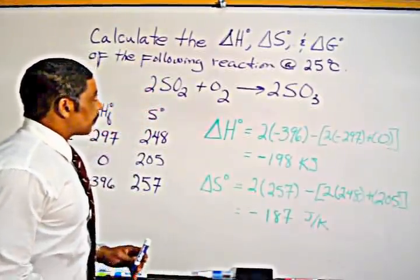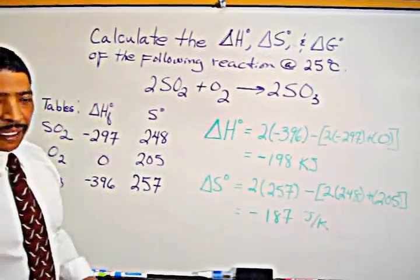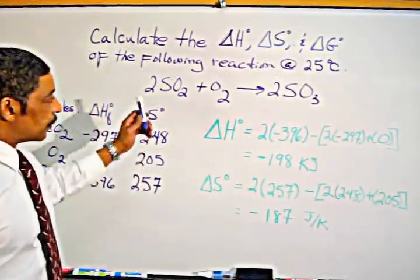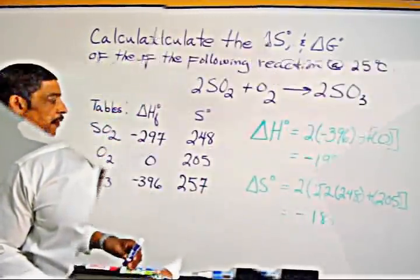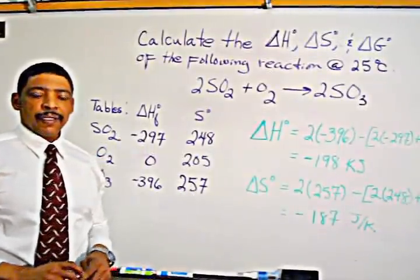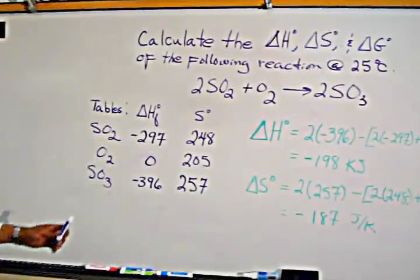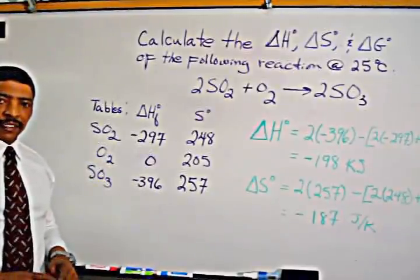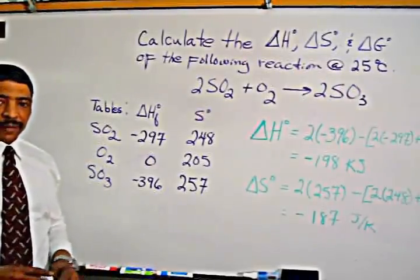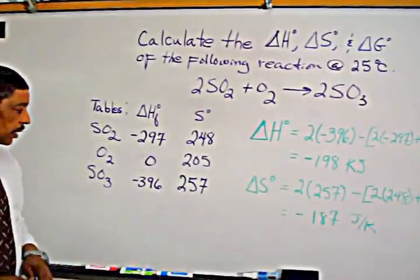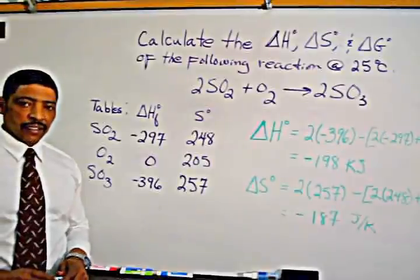Consider the following practice problem: calculate the delta H, delta S, and delta G of the following reaction at 25 degrees Celsius, where sulfur dioxide reacts with oxygen to produce sulfur trioxide. The values for standard heat of formation and entropy may be taken from a table. The heat of formation for sulfur dioxide is negative 297 kilojoules per mole, for oxygen gas, which is an element, is zero kilojoules per mole, and for sulfur trioxide is negative 396 kilojoules per mole.